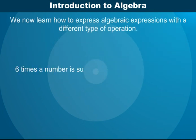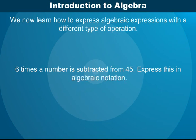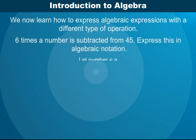How do you express 6 times a number subtracted from 45? Let the number be A. 6 times the number is 6A.